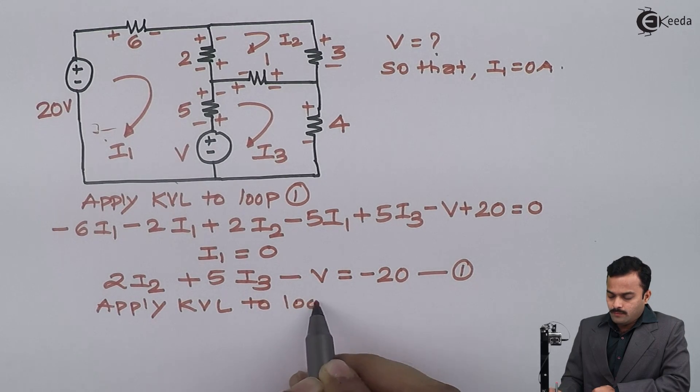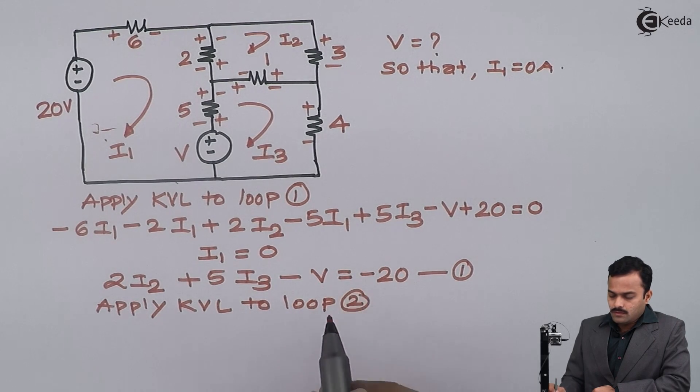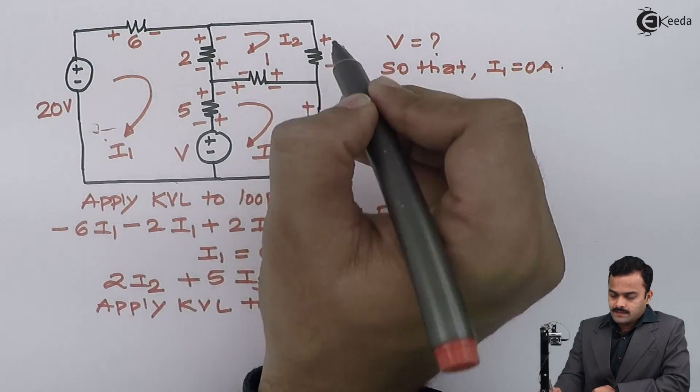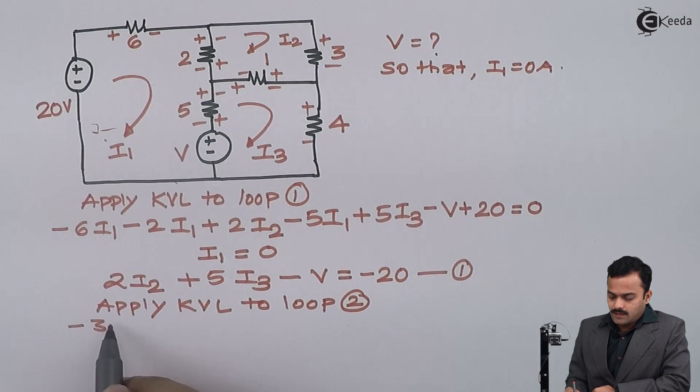Similarly, I will apply KVL to loop number 2. KVL to loop number 2, so I will trace this path. Hence I will get minus 3I2.